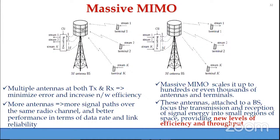There are K users with single antennas communicating with an M-antenna base station. In the uplink, decoding is performed at the base station. In the downlink, K streams for K users are pre-coded and transmitted from the base station antennas to the users.